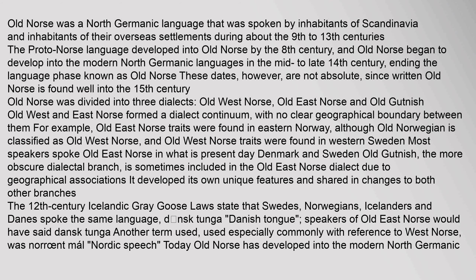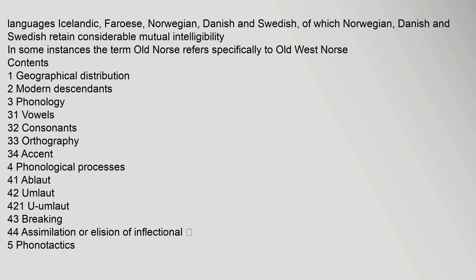Today Old Norse has developed into the modern North Germanic languages: Icelandic, Faroese, Norwegian, Danish and Swedish, of which Norwegian, Danish and Swedish retain considerable mutual intelligibility in some instances. The term Old Norse refers specifically to Old West Norse.